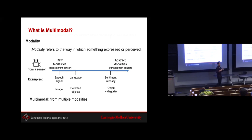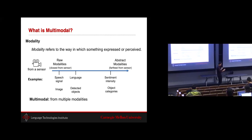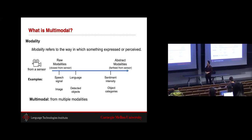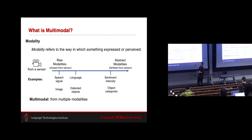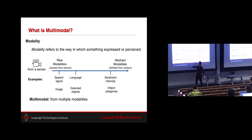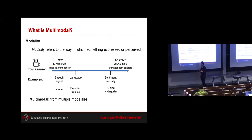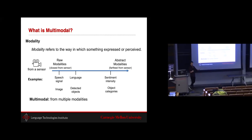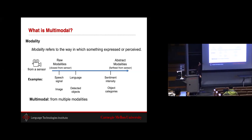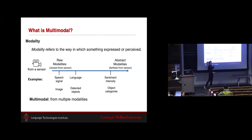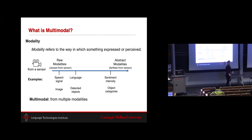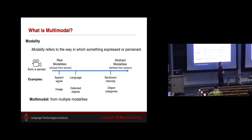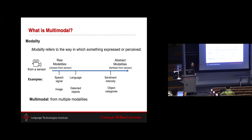More formally, the world gives us many expressions of data, and we need sensors to capture them. Capturing data through sensors defines raw modalities — for example, a video camera and speech signal capturing this lecture. We can then process these modalities: transcribing speech to language gives a different modality; further processing can determine sentiment, language, and so on. So there's a whole spectrum from raw to abstract modalities.